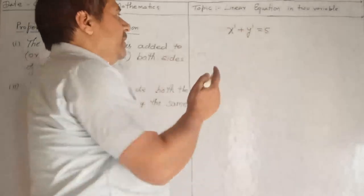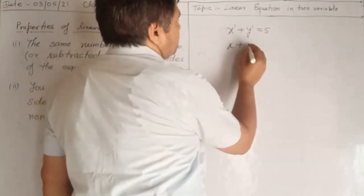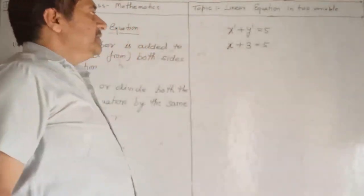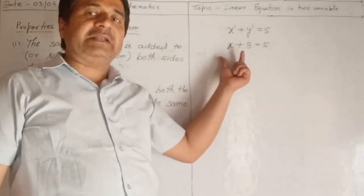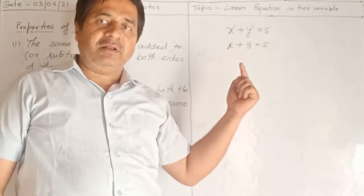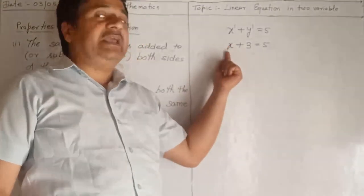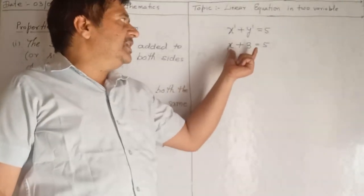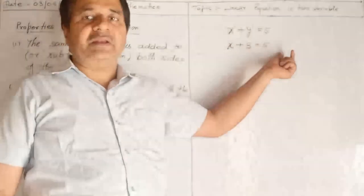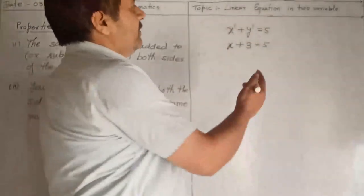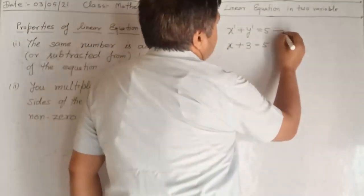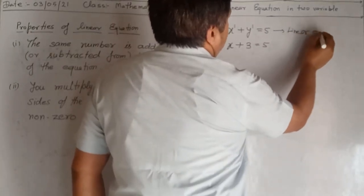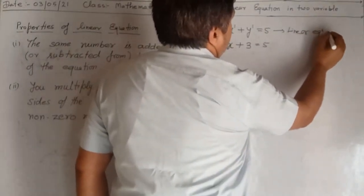Now here, x plus three equals to five — this is also a linear equation, but it is a one-variable equation because we use only the x variable. So this is a linear equation in one variable, and x plus y equals to five is a linear equation in two variables.